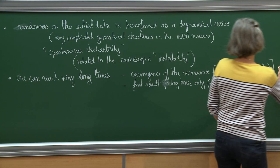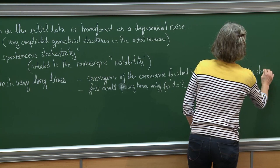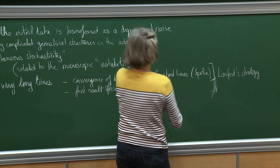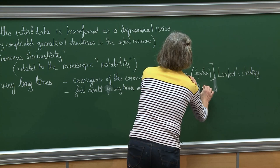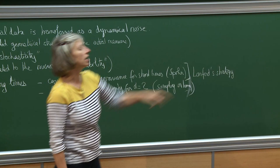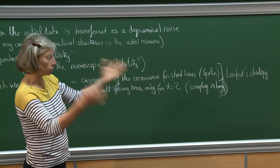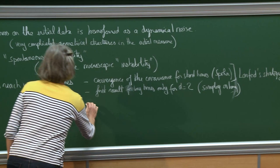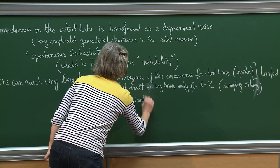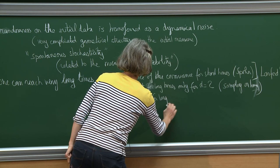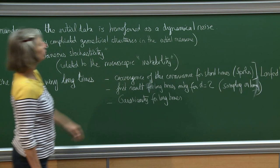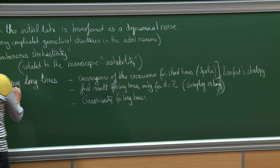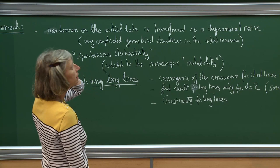These proofs used essentially a Lanford strategy. The new result is much better: you have long times and convergence of all moments — you prove the limiting field is Gaussian (a Cauchy process). These results for long times in all dimensions are very recent. What is really important is that we can reach very long times, which also allows looking at the hydrodynamic limit.